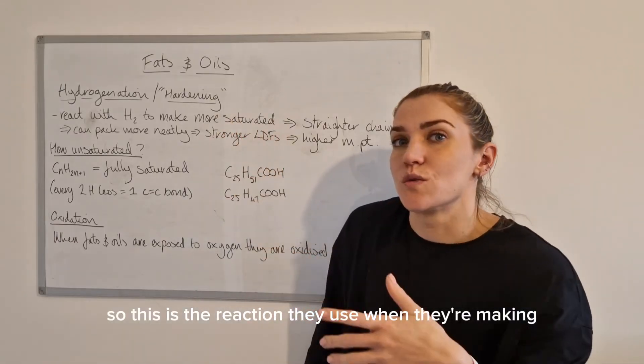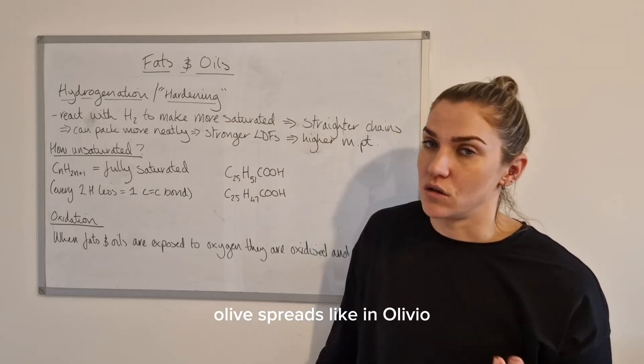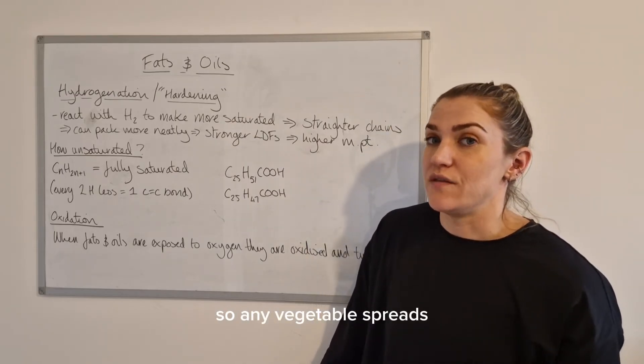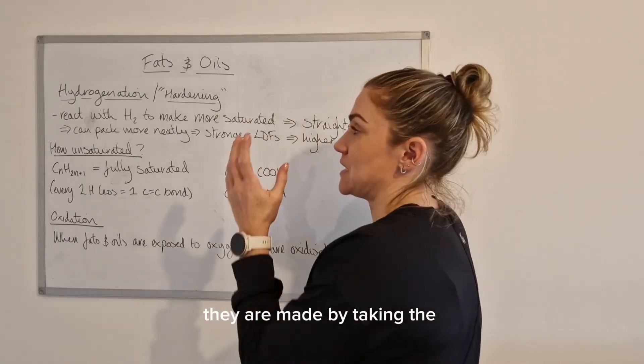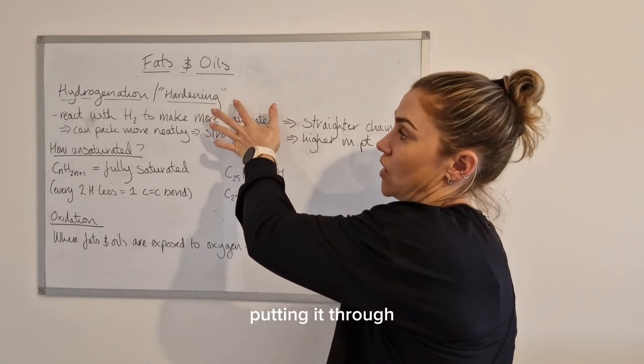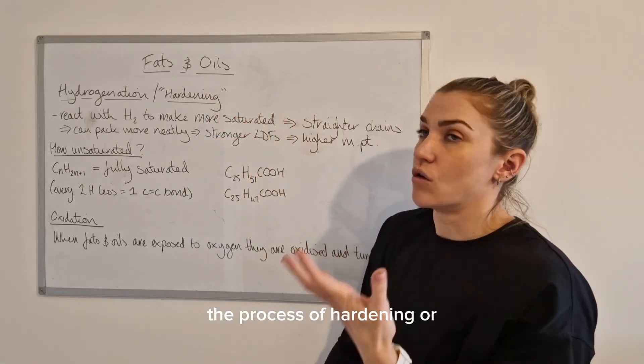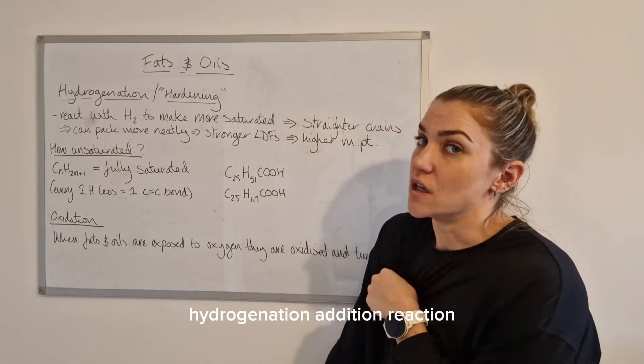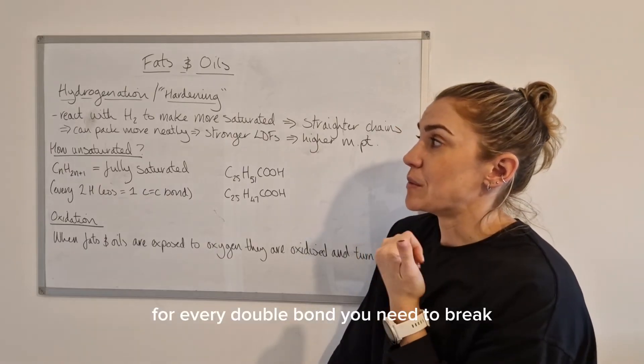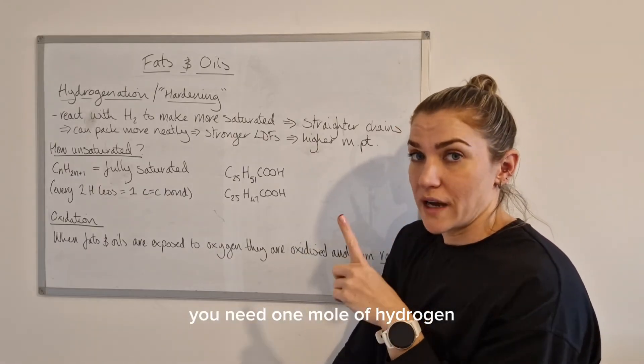This is the reaction they use when they're making olive spreads like Olivio or I Can't Believe It's Not Butter. Any vegetable spreads are made by taking the oil, vegetable oil, and putting it through the process of hardening or a hydrogenation addition reaction.